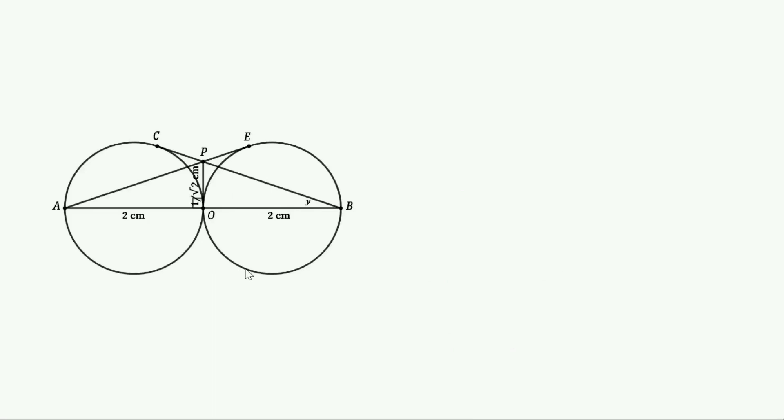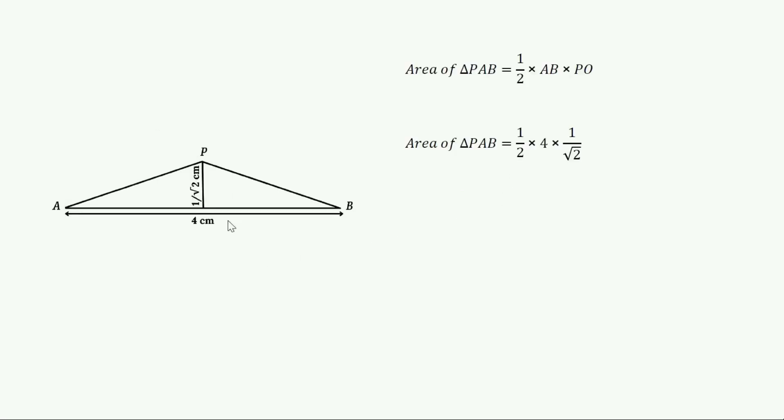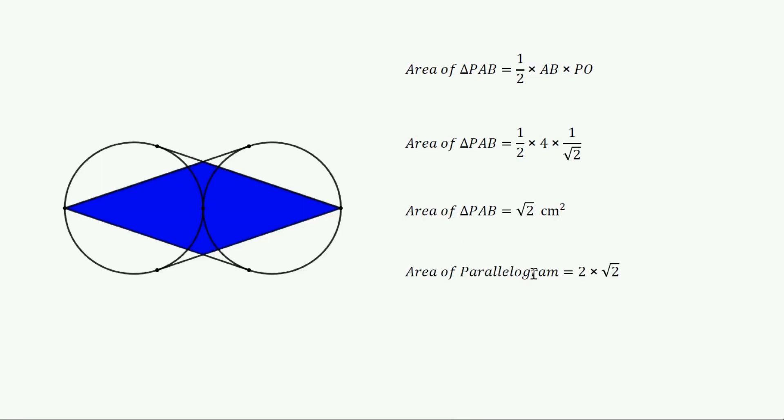Now we can find the area of triangle POB. That is, area equals half into 4 into 1 by root 2. Area of POB equals root 2 centimetre square. We know area of parallelogram is 2 times POB. So, we can write area of parallelogram equals 2 times root 2 or area equals 2 root 2 centimetre square.